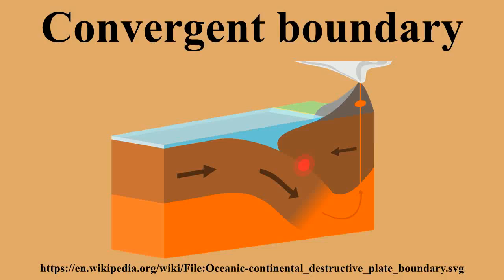In plate tectonics, a convergent boundary, also known as a destructive plate boundary, is an actively deforming region where two tectonic plates or fragments of the lithosphere move toward one another and collide.